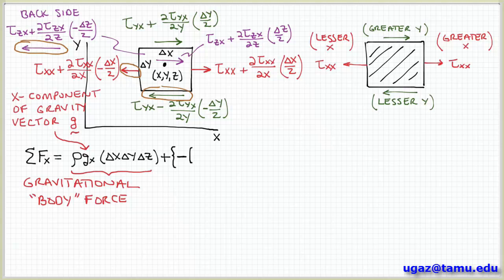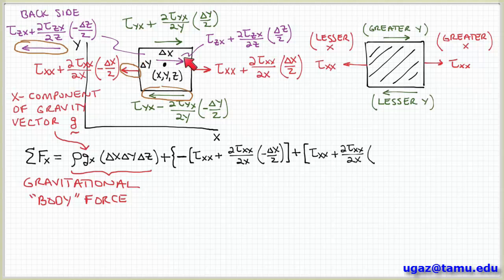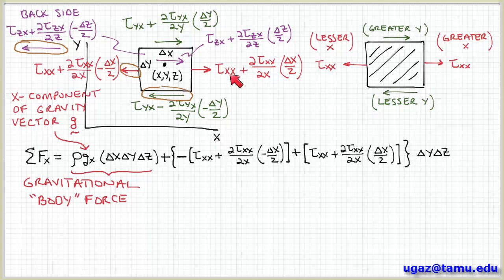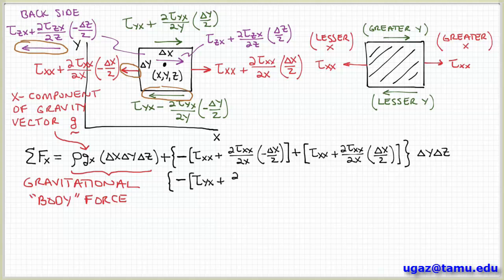Now for the stresses due to forces acting in the x direction, we start with the surfaces whose normal vector is in the x direction — the left and right hand faces. On the left hand side we have tau_xx plus the partial of tau_xx with respect to x times negative delta_x over 2, and by our sign convention that's a negative stress, so we have a minus sign. On the right hand face we have tau_xx plus the partial of tau_xx with respect to x times delta_x over 2 — a positive sign, since the fluid acting on the surface is at a greater value of x. That's multiplied by the face area delta_y delta_z.